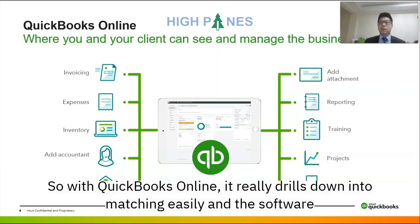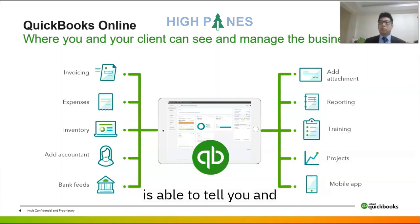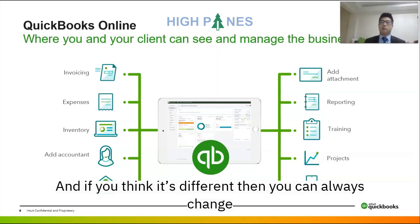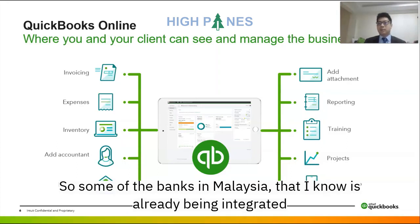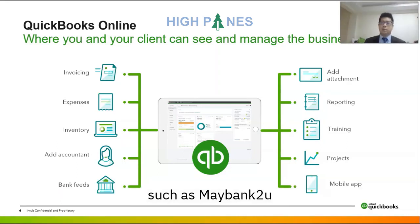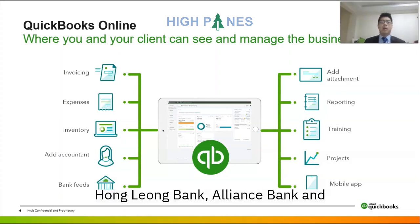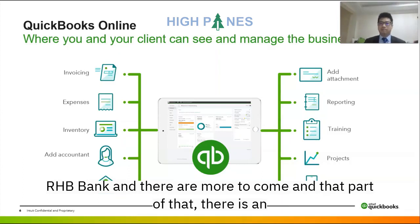With QuickBooks Online, it really makes matching easy. The software can tell you and recommend which transactions to match, and if you disagree you can always change the matching manually. Some of the banks in Malaysia already integrated include Maybank, CIMB, Alliance Bank, and RHB Bank, with more to come.